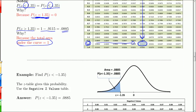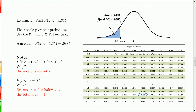Now let's look at a negative z-score. Find the probability that z is less than negative 1.35. On the standard normal curve, negative 1.35 is to the left, and I want to find the shaded area to the left of it. I go to the negative z-table and look for negative 1.3 in the row, then add the additional 0.05 for the second decimal. Going down that column and across that row gives 0.0885 — that's the area and also the probability.